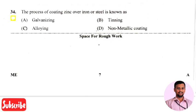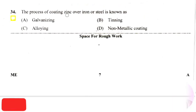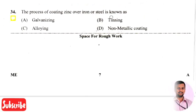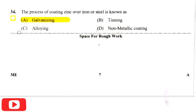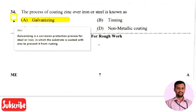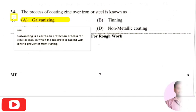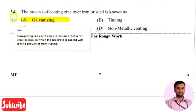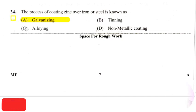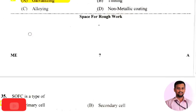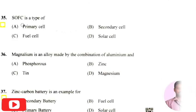The next question is: the process of coating zinc over iron or steel is known as — the right answer is option one, that is galvanizing. Galvanizing is a corrosion protection process in which steel or iron is coated with zinc to prevent rusting.